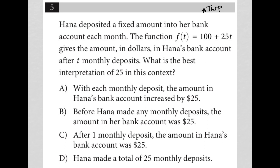Hannah deposited a fixed amount into her bank account each month. The function f of t equals 100 plus 25t gives the amount in dollars in Hannah's bank account after t monthly deposits. So t monthly deposits, we have 25 times t, which means she's depositing $25 per month. And we have this $100 here, which means she must have started off her savings with a $100 deposit.